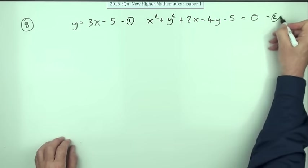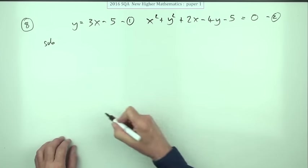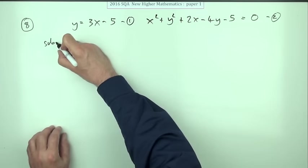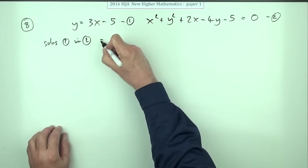So if I'm looking to check if it is a tangent, I want to check if it cuts once, if it intersects once. So I'll substitute one into two. And when I do that, I'll have x squared plus, instead of y it will be 3x minus 5 squared.